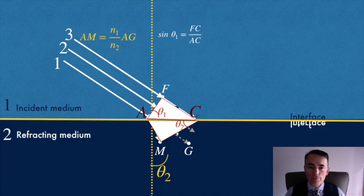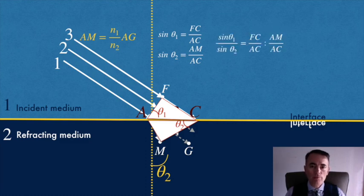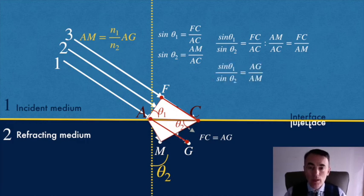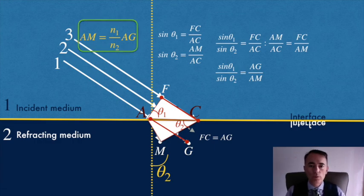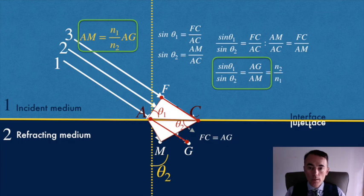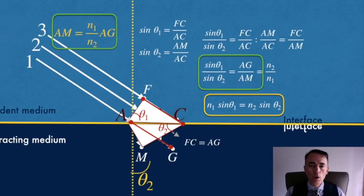Using the definition of sine theta 1 and 2 we write sine theta 1 equal to FC over AC and sine theta 2 as AM over AC. If we divide both expressions we get FC over AM. Because FC is the same length as AG then, comparing with the previous result, we can write that AG over AM is N2 over N1. This is the same as Snell's law of refraction.